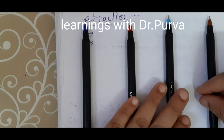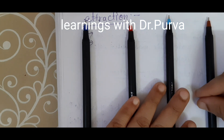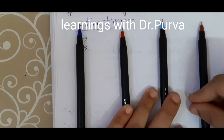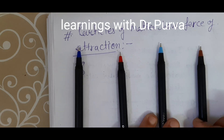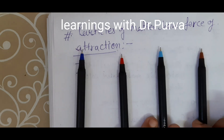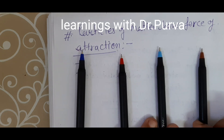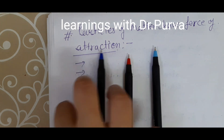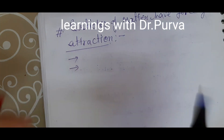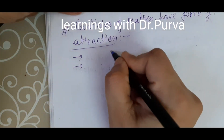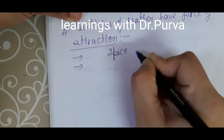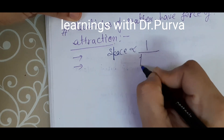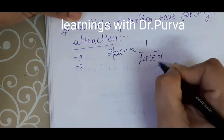Now the third characteristic: particles of matter have a force of attraction between them. The force of attraction depends on the space between the particles. If we want to express this relationship, the space between particles is inversely proportional to the force of attraction — meaning less space results in greater force of attraction.